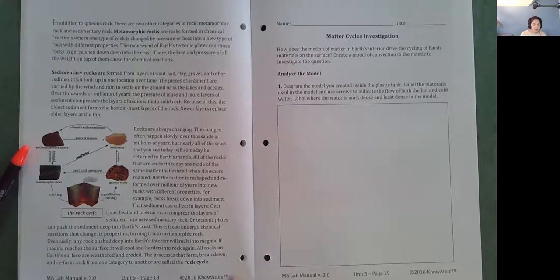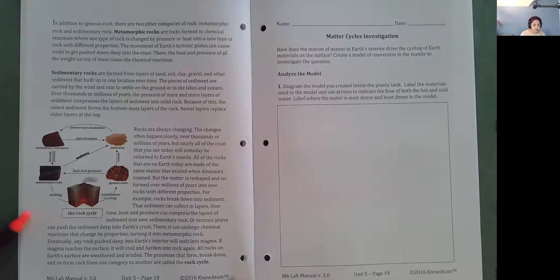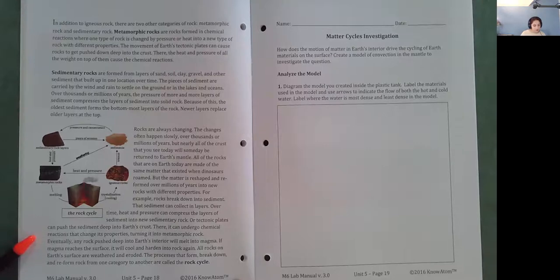Rocks are always changing. The changes often happen slowly over thousands or millions of years, but nearly all of the crust that you see today will someday be returned to Earth's mantle. All of the rocks that are on Earth today are made of the same matter that existed when dinosaurs roamed, but the matter is reshaped and reformed over millions of years into new rocks with different properties. For example, rocks break down into sediment. That sediment can collect in layers. Over time, heat and pressure can compress the layers of sediment into new sedimentary rock. Or tectonic plates can push the sediment deep into Earth's crust. There, it can undergo chemical reactions that change its properties, turning it into metamorphic rock. Eventually, any rock pushed deep into Earth's interior will melt into magma. If magma reaches the surface, it will cool and harden into rocks again. The processes that form, break down, and reform rock from one category to another are called the rock cycle.